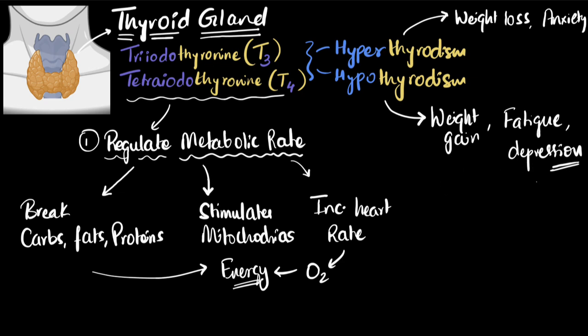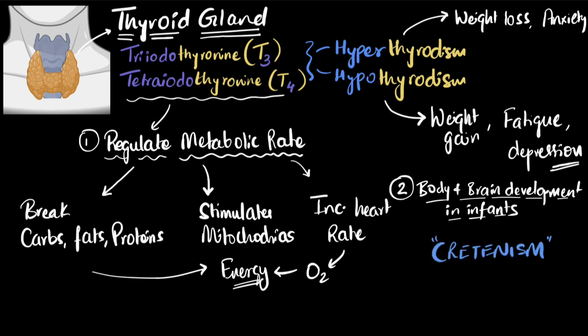Another major function of thyroid hormones is that they affect the body and the brain development of infants and fetuses and children. So imagine that somebody who's pregnant has hypothyroidism. What's going to happen? Well, in addition to all the stuff that we just discussed, her baby's brain and body development, physical development would be severely affected, which means if this is untreated, then eventually when the baby comes out, it will be severely stunted, both physically and mentally. And this particular condition is given a name, it's called cretinism, which would be an extremely difficult news for the family.